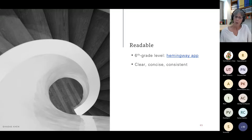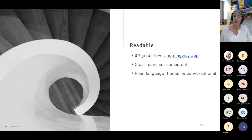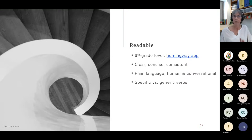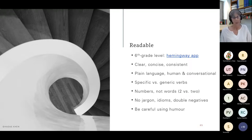We want to be clear, concise, and consistent — short, simple subject-verb-object sentences. Use bulleted lists and use the same words for the same task; get rid of synonyms. Go with 'select,' 'choose,' or if you're more informal, 'pick.' Use plain language that is human and conversational. Use specific rather than generic verbs — instead of 'configure' or 'manage,' tell them to 'connect' or 'save.' Use numbers as digits rather than words. Avoid jargon, idioms, double negatives, and be very careful using humor — it's hard enough to translate regular text, let alone humor.